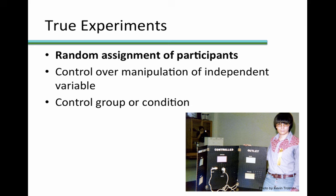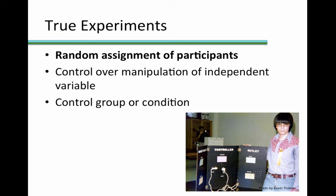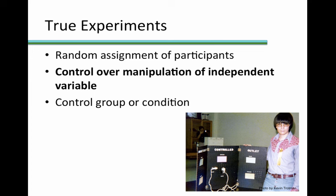When we say counterbalanced order, we simply mean that different participants experience the conditions in different orders. True experiments must also involve control over the manipulation of the independent variable. And finally, true experiments must have some sort of control condition or control group in which the participants are like those in the experimental group — which receives a treatment — in every way except that they don't receive the treatment, or that they receive a different version of the treatment.